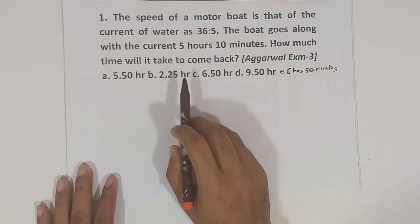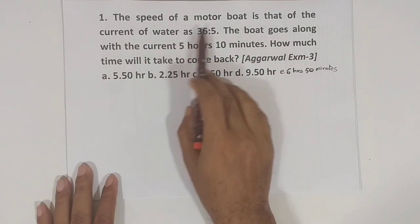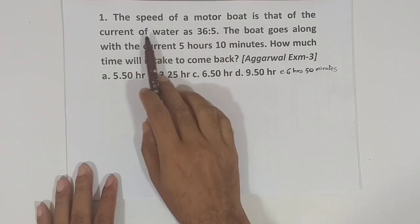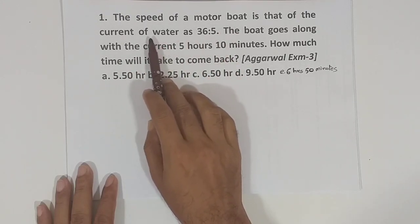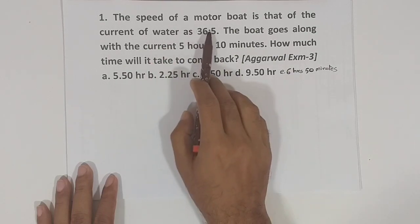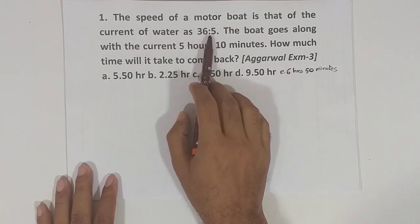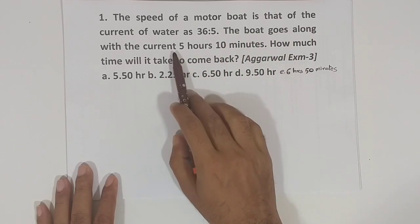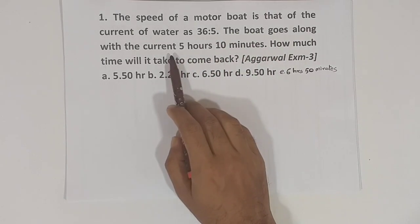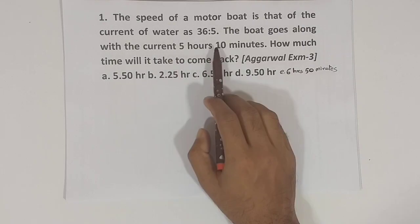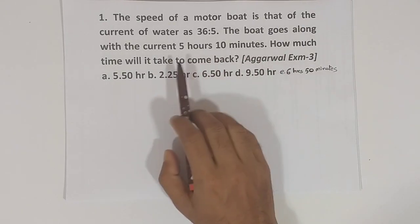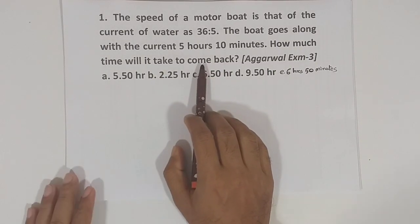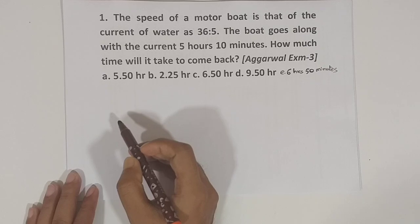Ekhane eita bola hochhe speed of the motor boat aar sthir panir gotibheg, ebon dhorar gotibheg water er dhorar gotibheg, e anupaatta dewa achhe 36 ratio 5. Ekhane eita bola hochhe jodi dhorar anukule jethe shamai lage 5 ghanta 10 minute, sthir panir gotibheg mane pratikule ase, kato shamai lagbe.